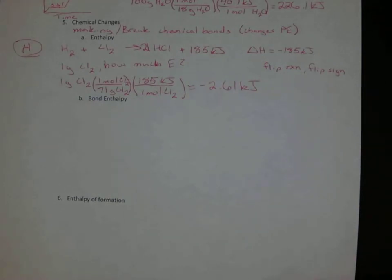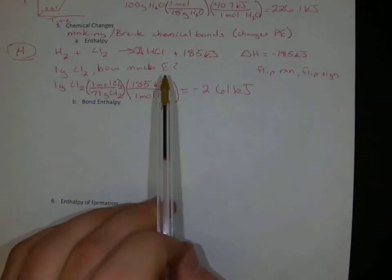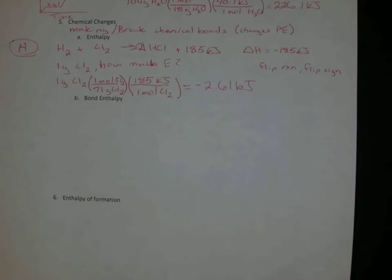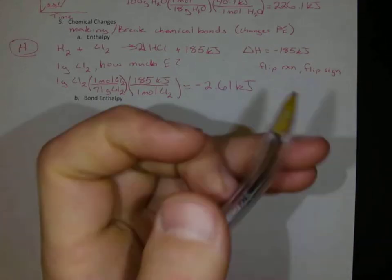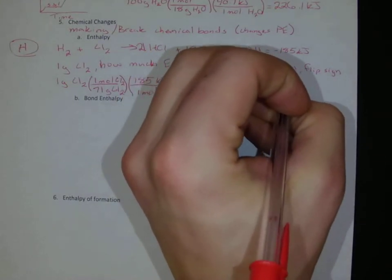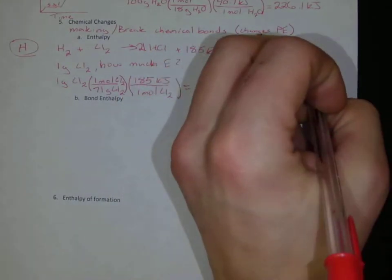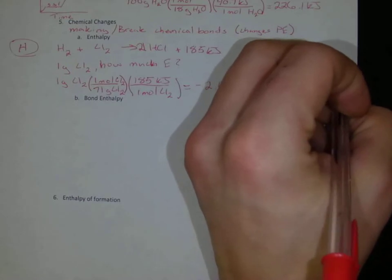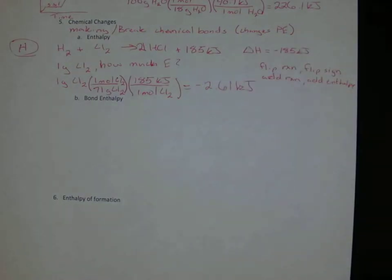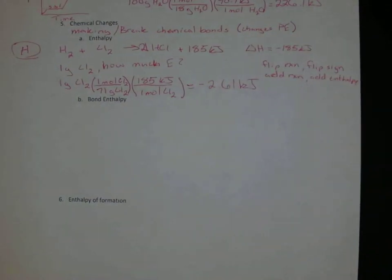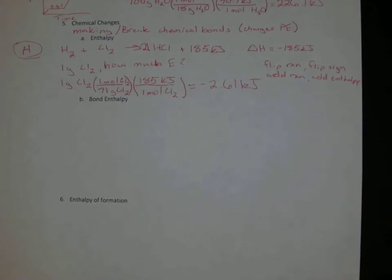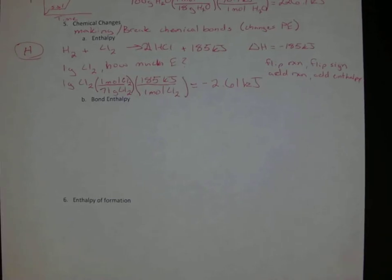But if I just cut the reaction in half, then I cut my overall enthalpy in half. So if we have multiple reactions, we can actually add those reactions up and get to an overall reaction. So if we add reactions, we add enthalpies. So this is what's known as Hess's Law, where we need to add a few reactions together to get to our overall chemical reaction.